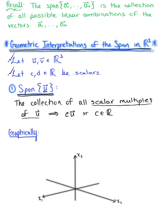So what is this collection going to look like graphically? Here we have space with the x sub 1, x sub 2, and x sub 3 axes. From the origin is our vector u. The span of vector u is the collection of all scalar multiples of vector u.